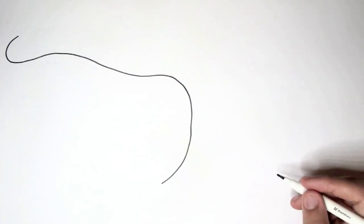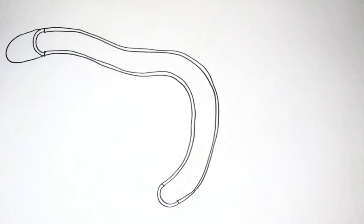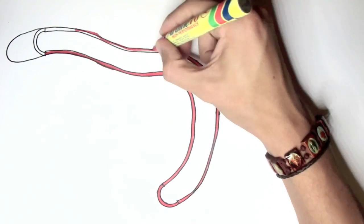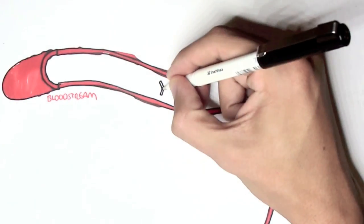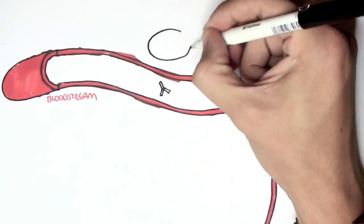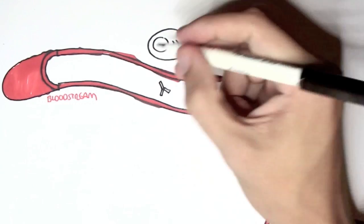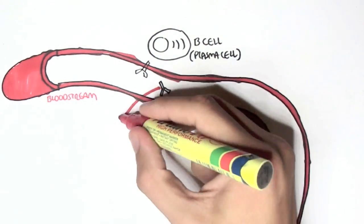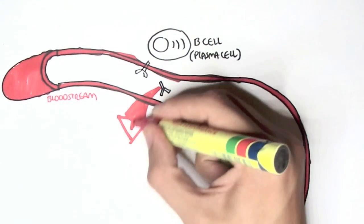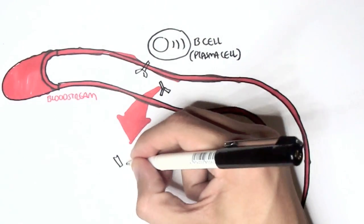In this video, we're going to talk about antibodies. Antibodies, also known as immunoglobulins, are secreted by B cells — plasma cells specifically — in the bloodstream and into the tissues. Basically, antibodies are to control and stop pathogens and to assist in an immune response.